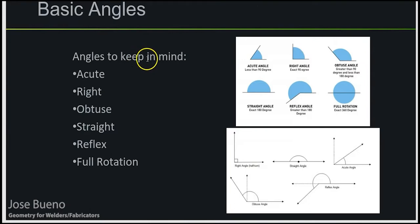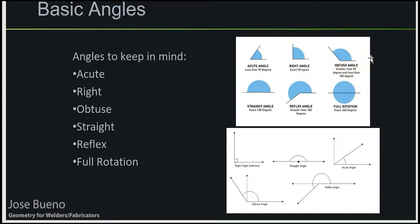Some basic angles to keep in mind: 360, 180, 90, and 45. An acute angle is anything less than 90 degrees. A right angle is 90 degrees. An obtuse angle is anything greater than 90, all the way up to 180 degrees, because 180 degrees is a straight angle. A reflex angle is anything greater than 180, and a full rotation is 360. As welders and fabricators, the ones we mainly need to remember are the right angle, acute angles like 45 or 30 degrees, obtuse angles, straight angles, and the full rotation.